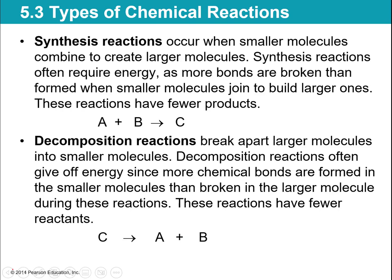Last time we were talking about why reactions occur and how energy exchange comes into play. This middle section of the chapter talks about types of chemical reactions. We have four basic types. The first two are when you either build molecules or break molecules down.